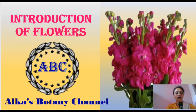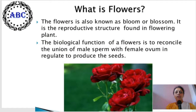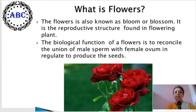Today we are going to learn the introduction of flowers. The flower is also known as bloom or blossom. It is a reproductive structure found in flowering plants. The biological function of a flower is to facilitate the union of male sperm with female ovum in order to produce seeds in plants.